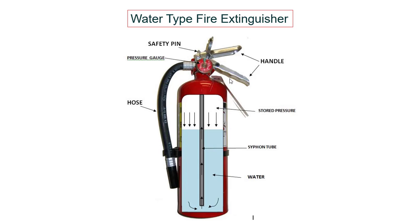Water type is most suitable for Class A fire — solid fire — for example wood, paper, and charcoal. This is a portable type, usually coming in 9-litre capacity. The outer container is filled with water, while the inside has compressed air at the required pressure. When you squeeze, through the siphon the pressurized water will go and extinguish the fire.